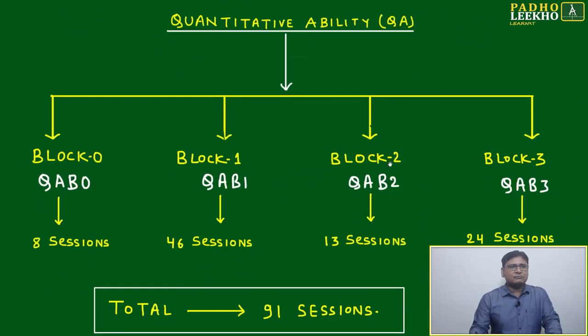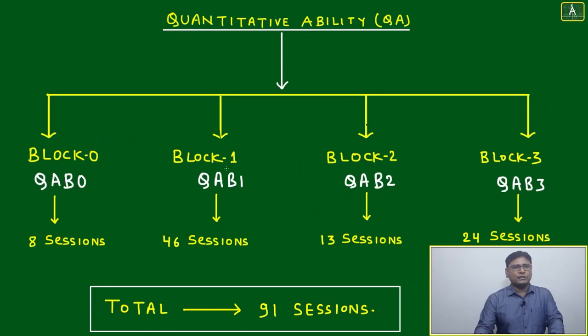Before this session, I'll give you the idea about Quantitative Ability. Total four blocks are there: Block 0, Block 1, Block 2, and Block 3.